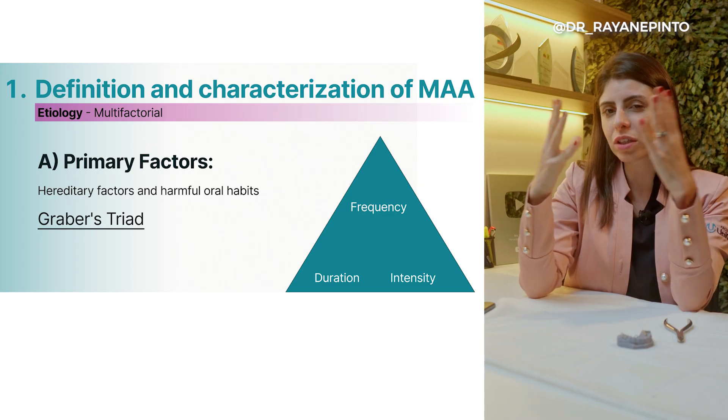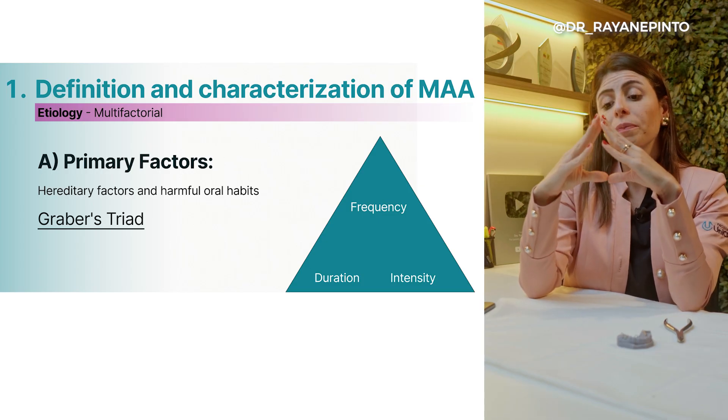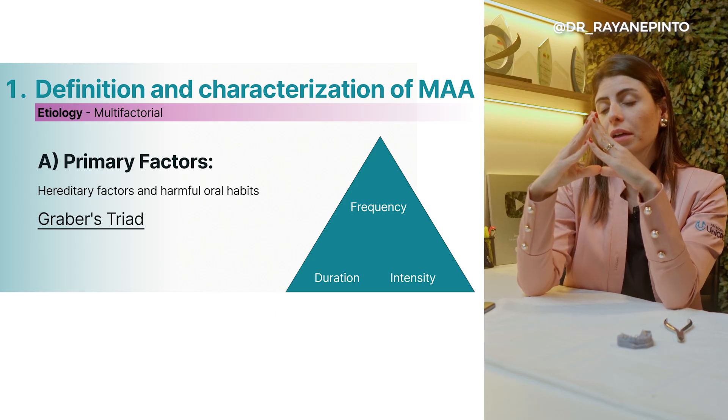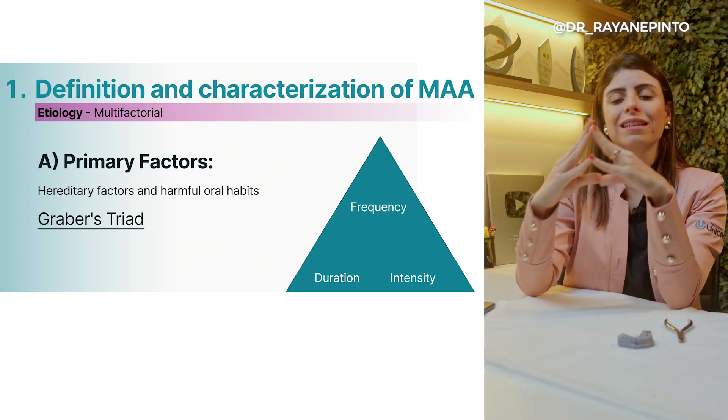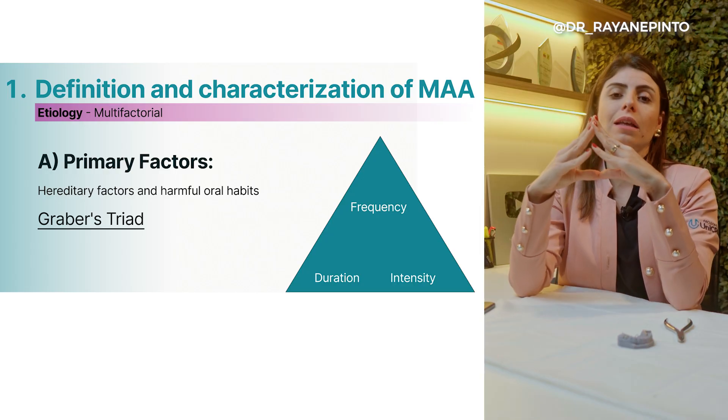Regarding the environmental aspects, we should always think about Grubber's triad. To develop an anterior open bite, I need to have: number one, frequency; number two, duration; and number three, intensity. It's frequency, duration, and intensity that lead to the development of an anterior open bite. Considering whether this patient is entirely of environmental etiology, or if there is a genetic aspect influencing a very vertical growth pattern, helps us understand the treatment approach and — importantly — the stability.